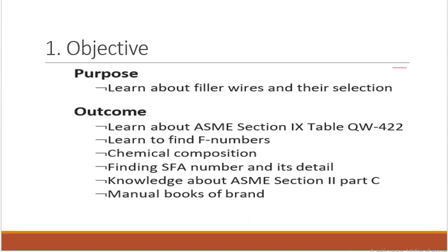Chemical composition is very important when you are choosing the filler metal. You should check the base metal chemical composition and the filler metal chemical composition — they should be equivalent. We also need to find the SFA number and details. Knowledge about ASME Section 2 Part C is required; I already gave a general idea in a previous video.